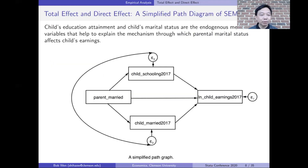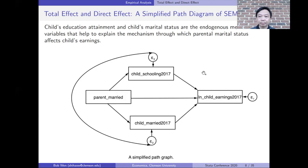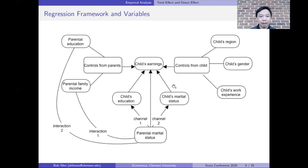I drew the path diagram using the Stata SEM Builder. The child's schooling and the child's marital status are the two mediator variables that represent the channels through which parental marital status affects the child's earnings. I decompose the total parental marriage effect into the direct effect and the indirect effect, where the indirect effect goes through the two mediator variables. The complete regression framework shows the direct and indirect effects as well as exogenous control variables from the child's characteristics and parental backgrounds.